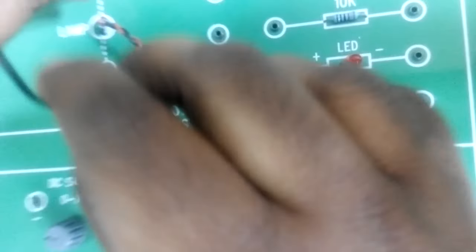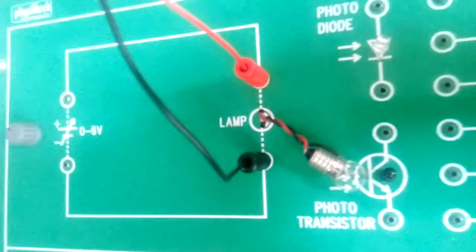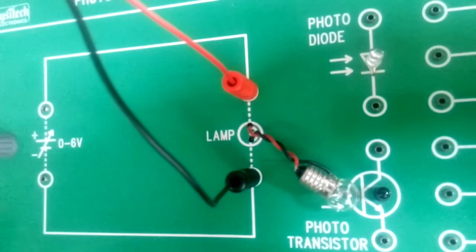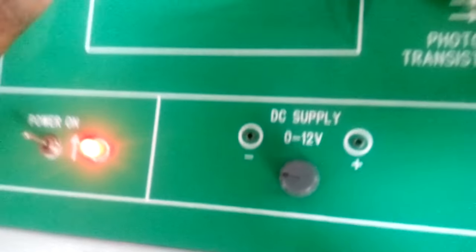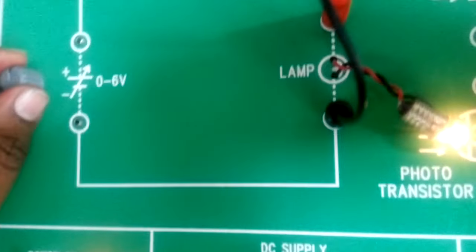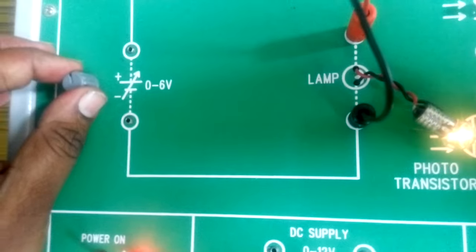Connect the multimeter across these two points. Switch on the power supply. Adjust the voltage such that the display value of voltage is 2 volts.